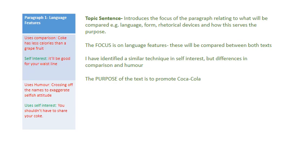The topic sentence introduces the focus of the paragraph relating to what will be compared — is it the language, the form, the rhetorical devices, how does this serve the purpose? I've already identified that the focus is going to be on language features, which will be compared between both texts. I've identified a similar technique in self-interest, but differences in comparison and humour. The purpose of the text is to promote Coca-Cola. I need to make the fact that the purpose is to sell Coca-Cola clear, and it's through similar and different language features that this can be seen in both texts.